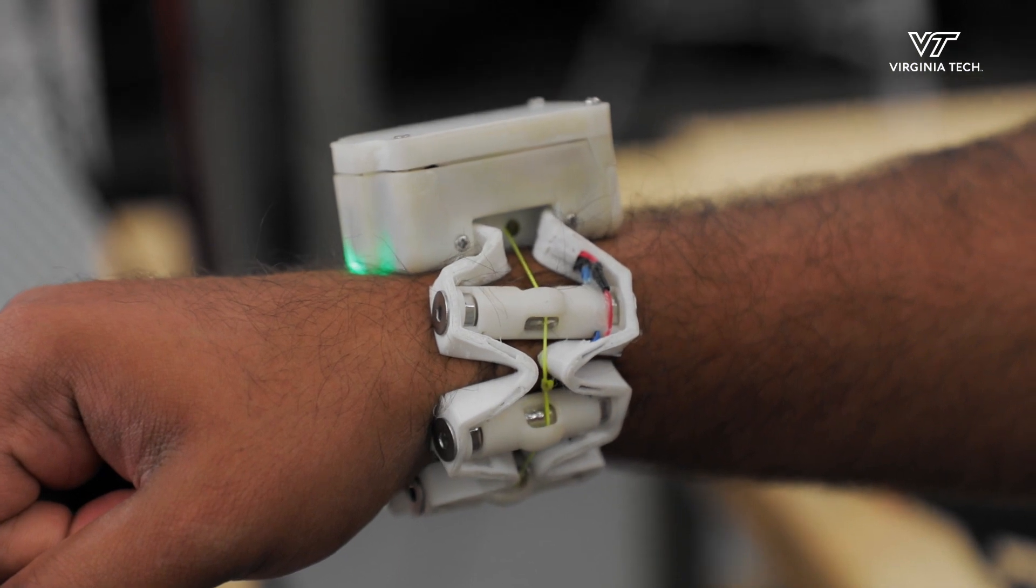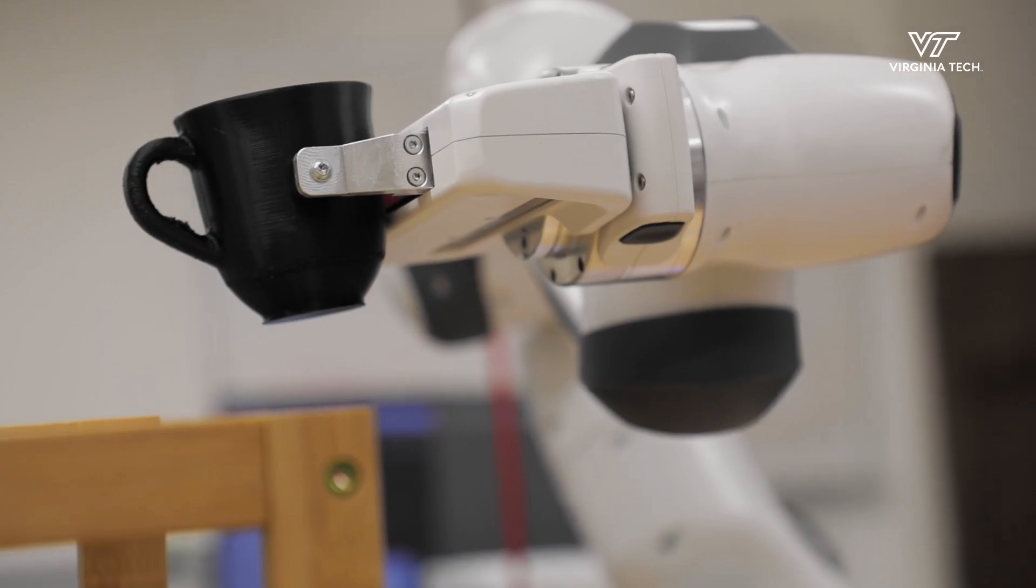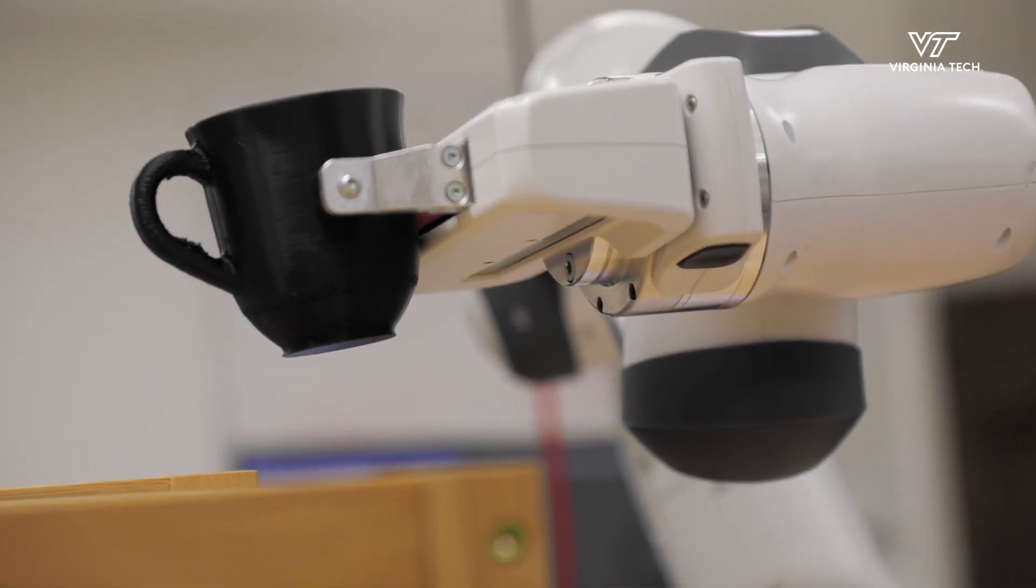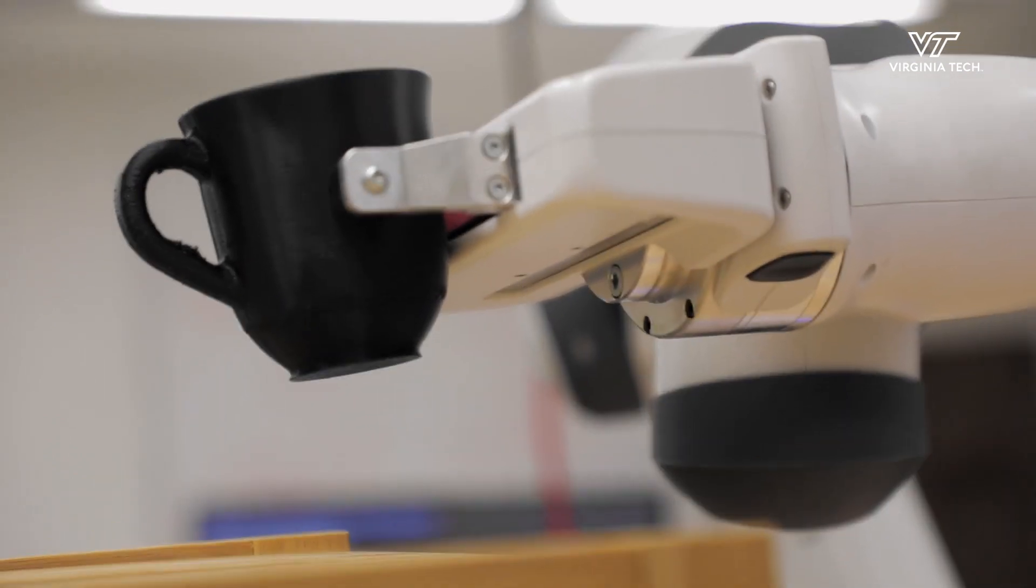And second, it actually helps me speed up my teaching because if I know the robot understands this part of the task—it knows where to put the coffee mug but doesn't understand what angle to carry it—I can focus my teaching specifically on keeping that coffee cup upright.